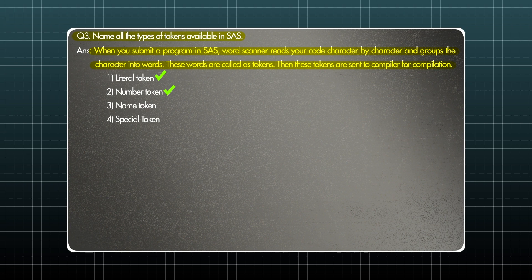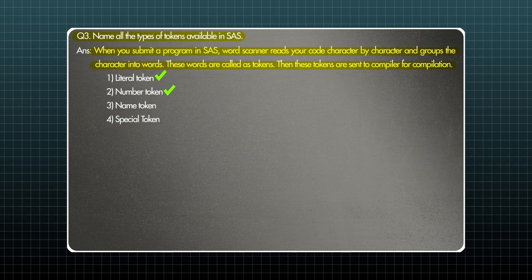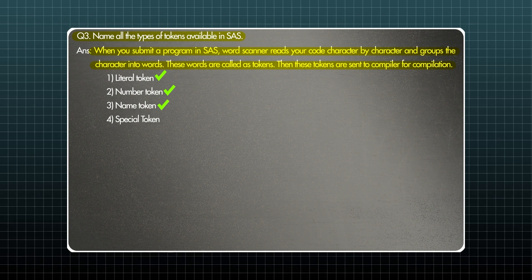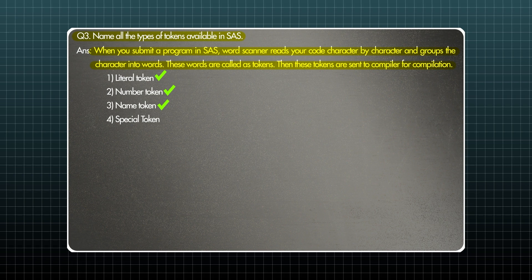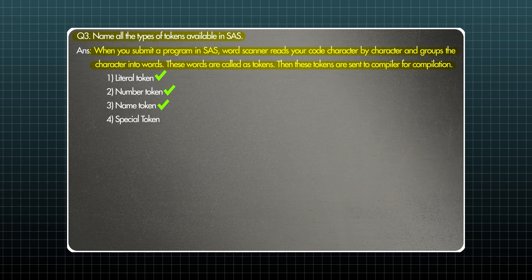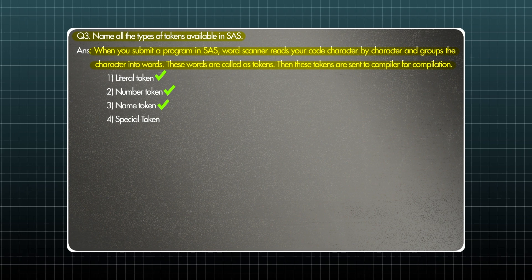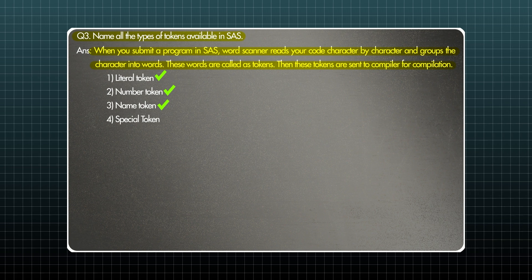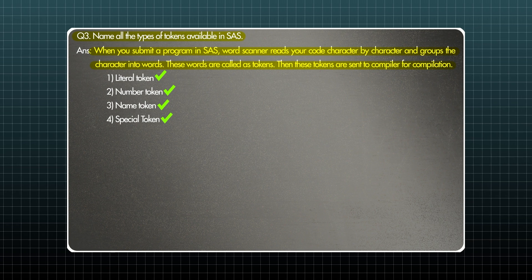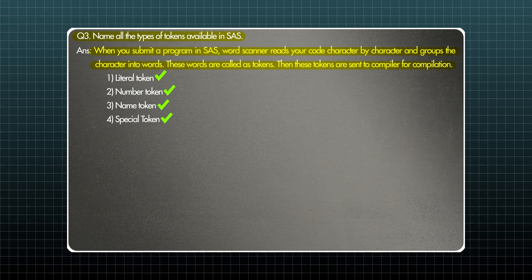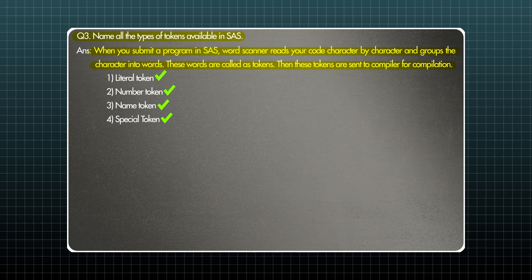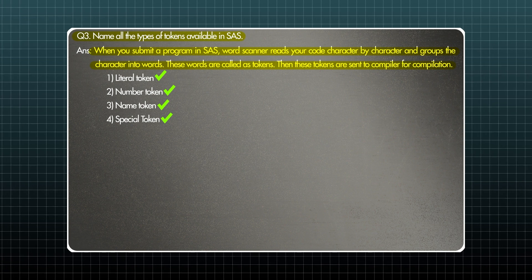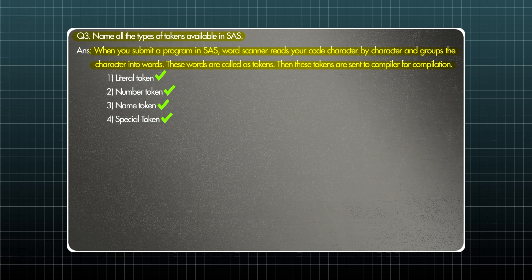The third is a name token. All statements like data, set, merge — these come under the name token. The last is the special token. If there is any special character like a semicolon, percent sign, or ampersand, those are part of a special token. I hope this is clear.